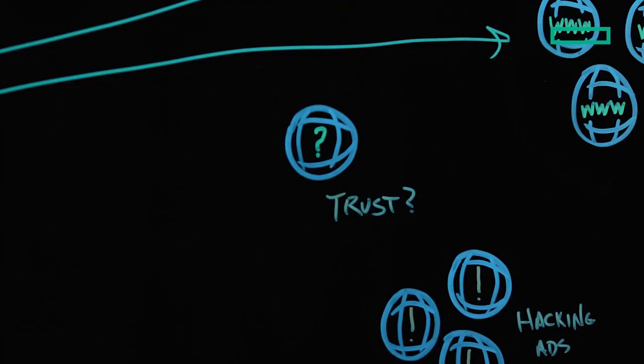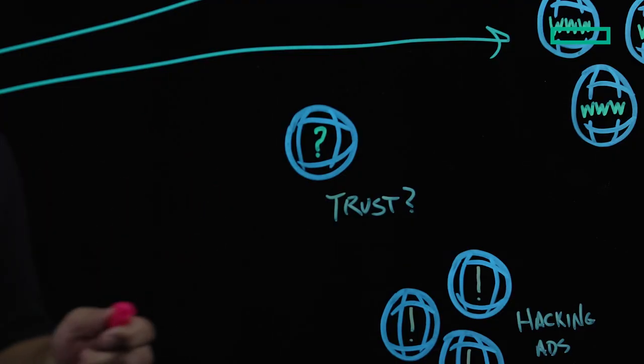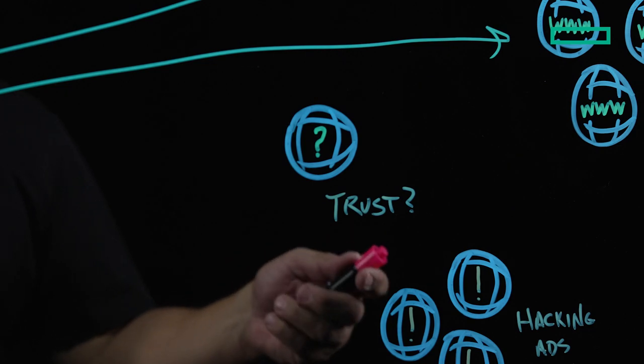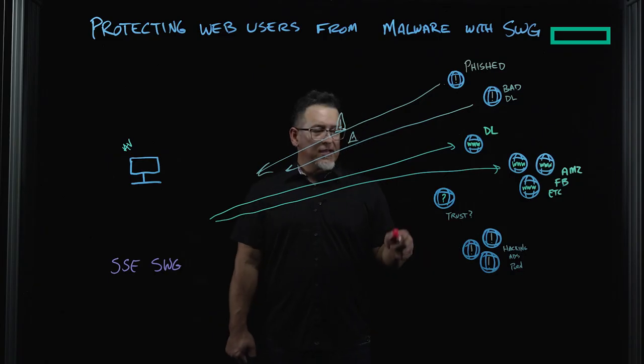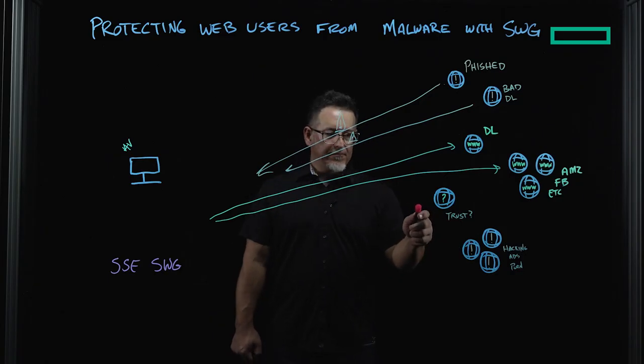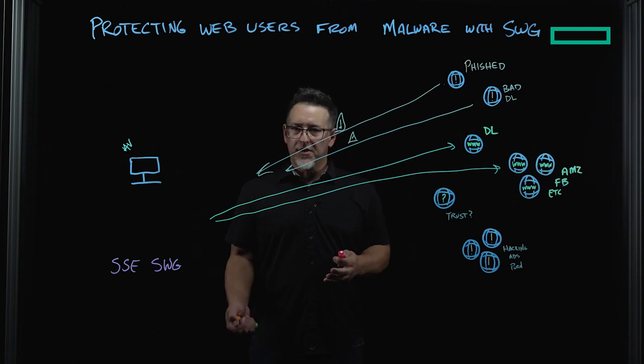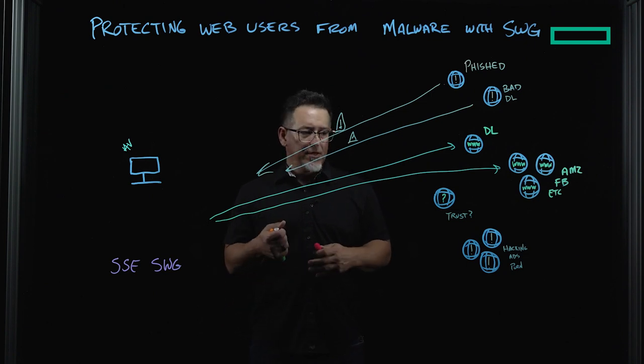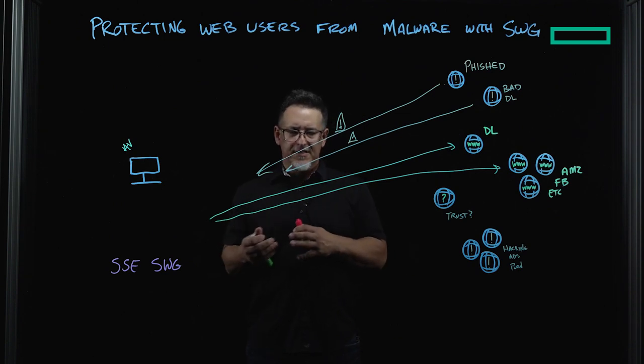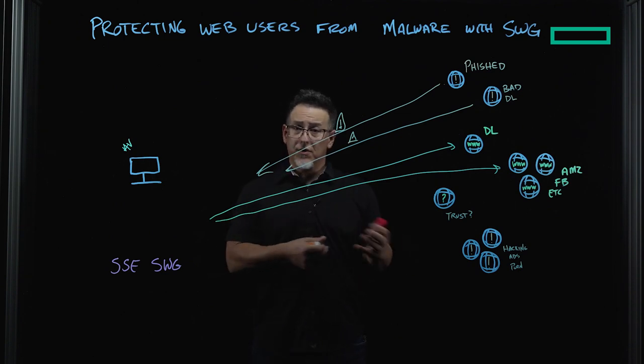But we also need to talk about the millions of domains that fall into categories like hacking, ads, or gambling. And finally, there are other sites that begin as trustworthy sites, but they become weaponized. And it's hard to know when that site goes from being a good site to a bad site.